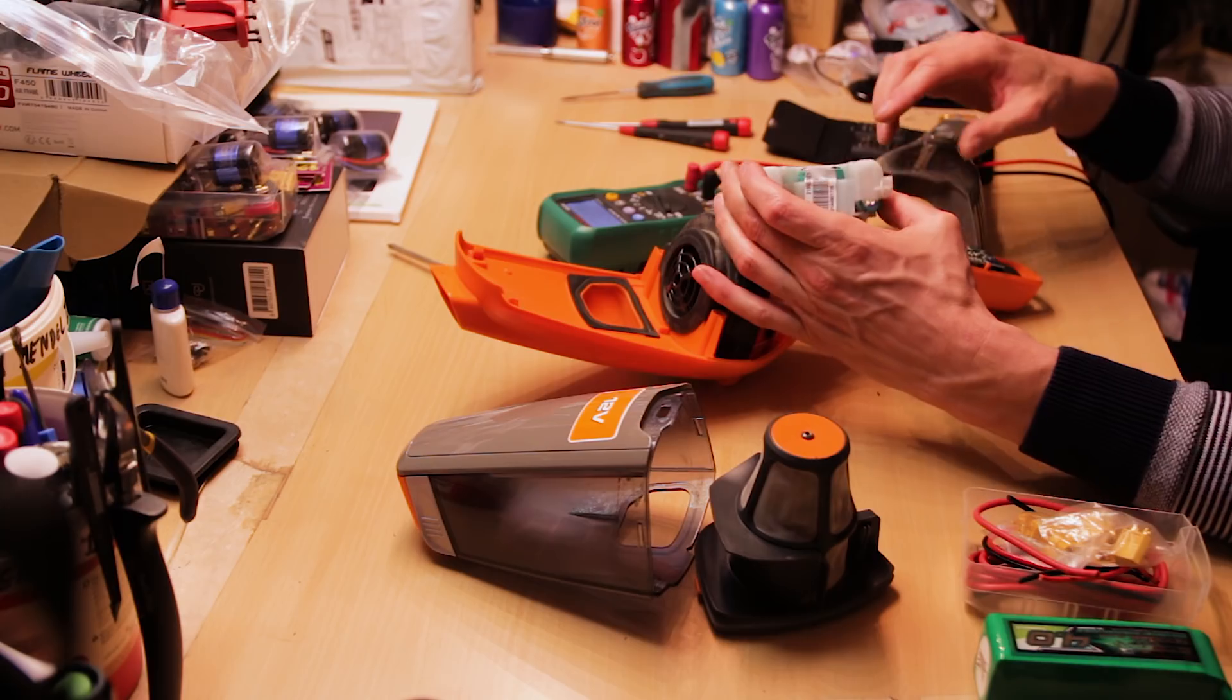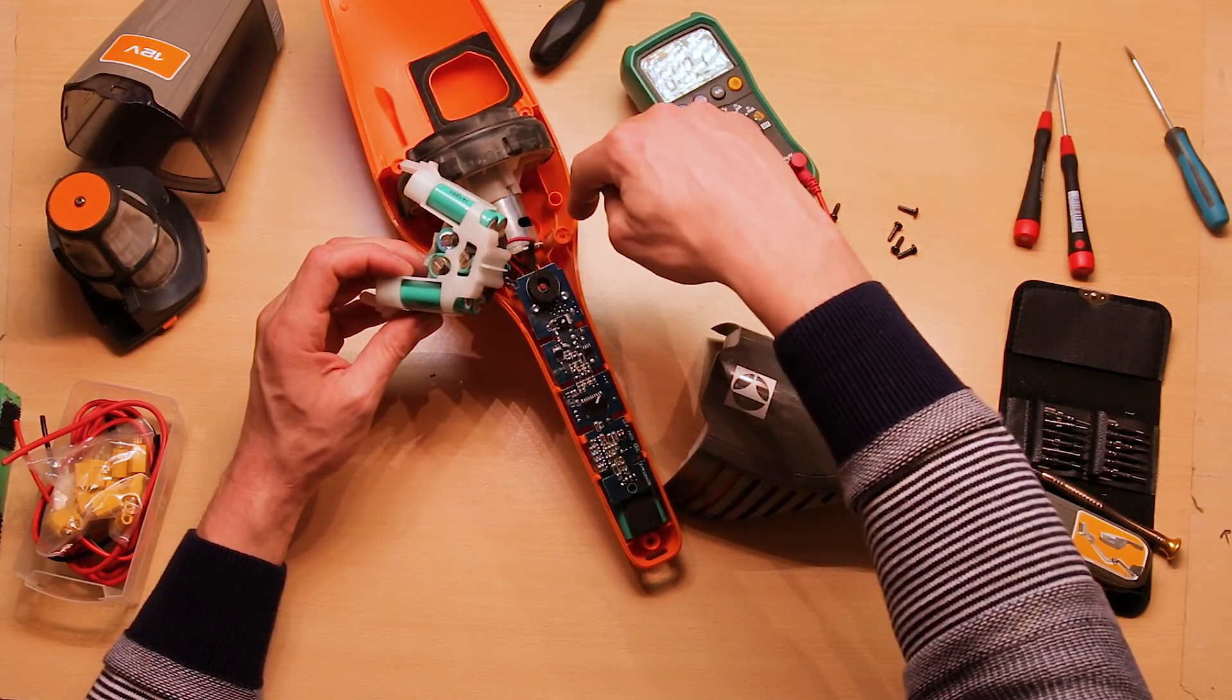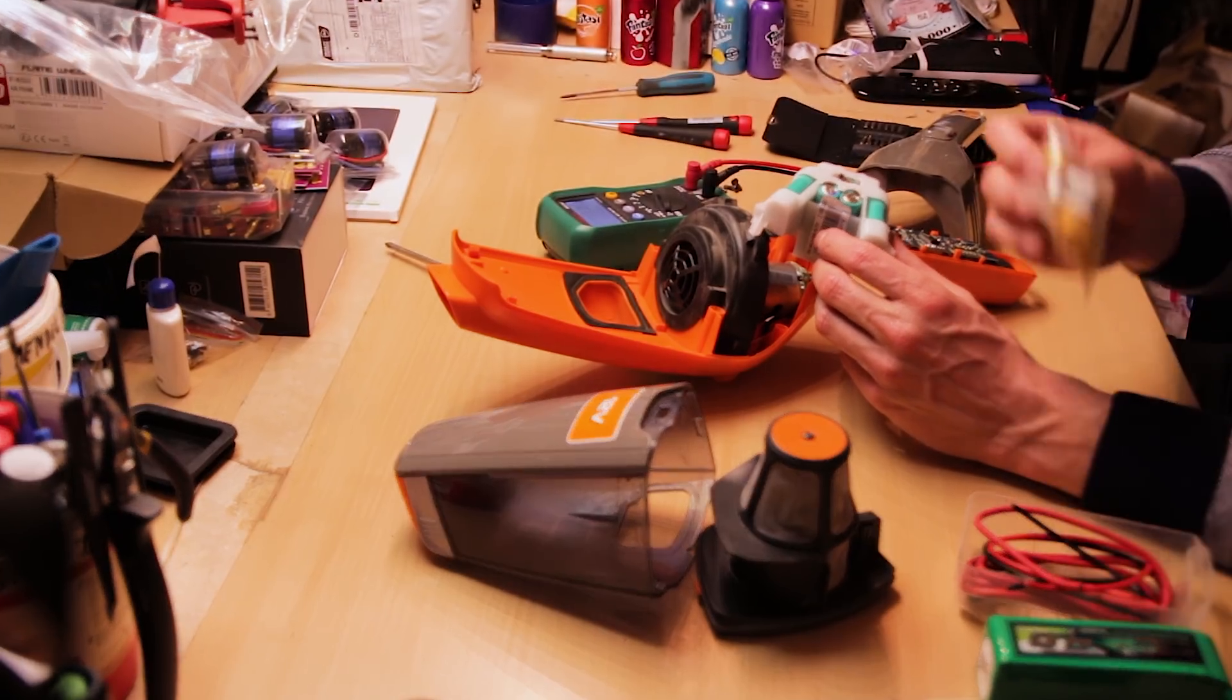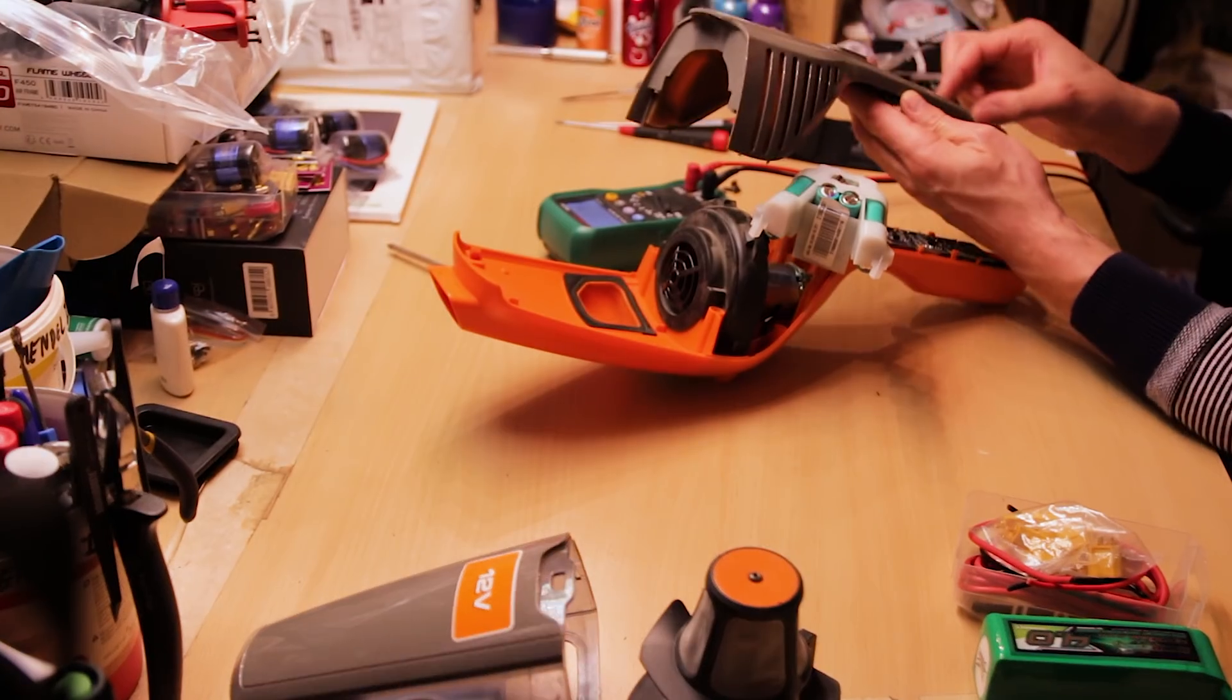First, we're gonna disconnect these batteries, lengthen this cable, drill a hole in the housing so the cable is coming out. And we can mount on those cables an XT60 connector, so we can mount a battery wherever. Probably here.